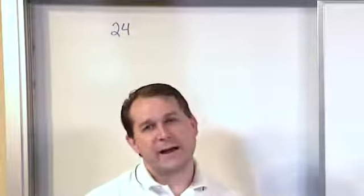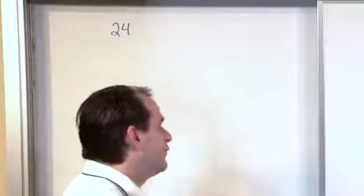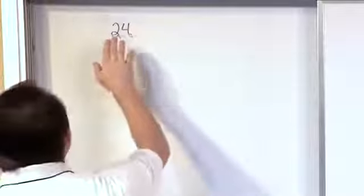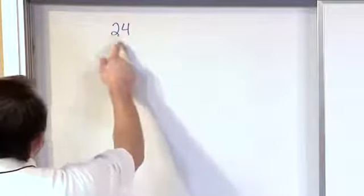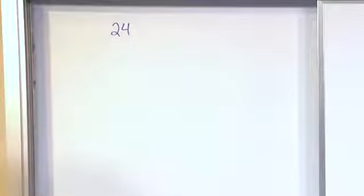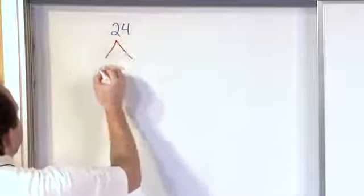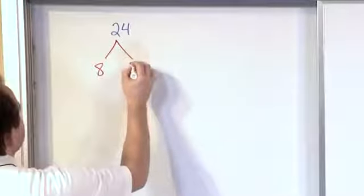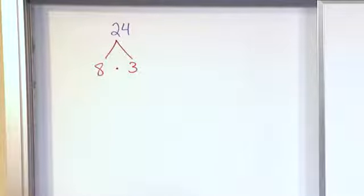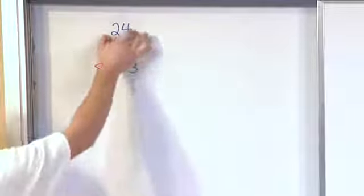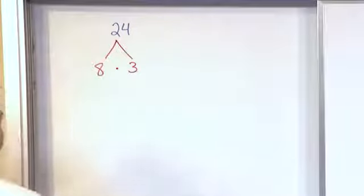Between you and me, I actually love building factor trees — they're fun for me. All you do is think of any two numbers that will multiply to give 24. There are lots of different ways to proceed. In this case, let's say I pick 8 times 3. If you remember from multiplication tables, 8 times 3 is equal to 24. So this is building our factor tree.